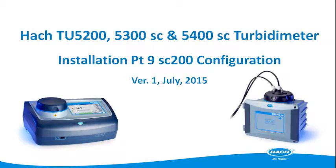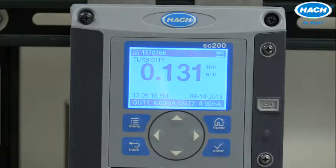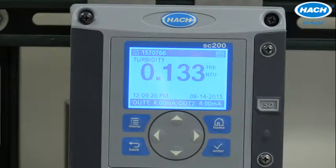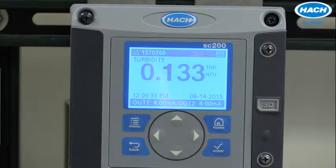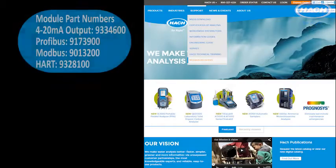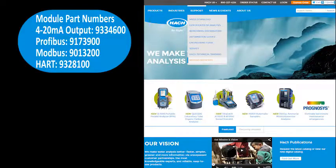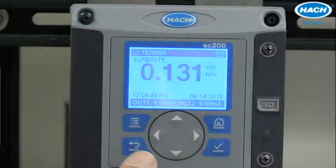The last item of installing the TU5300 or 5400SC process turbine emitter consists of configuring the digital or analog outputs for communication to a programmable logic controller or other type of digital control system. While this video will demonstrate the easy steps necessary to configure the analog outputs on the SC200, the digital settings such as Modbus or Profibus registers are available for easy download at www.hawk.com.